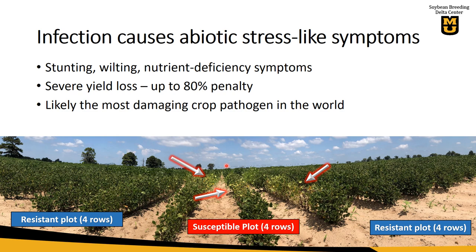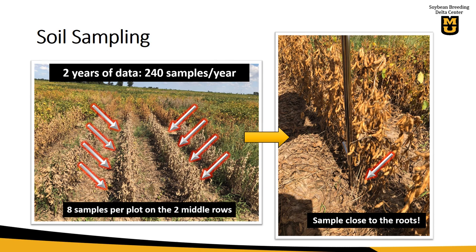This will drastically impact yield by the end of the season. So with this research, we tried to understand how well the resistance available now works. To do that, we had to know what was the field concentration of nematodes. We took soil samples from every single plot in this test for two years — over 480 samples across those two years. We took eight samples per plot, four on each side, and then bulked all of this and sent it to the lab, so we could have a very representative sample of nematode presence in the plot.